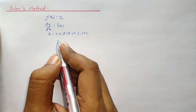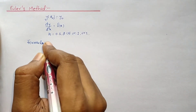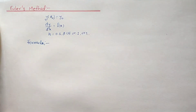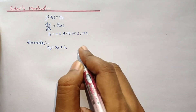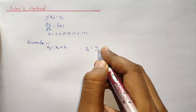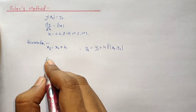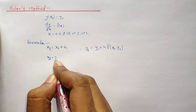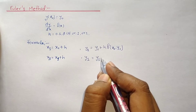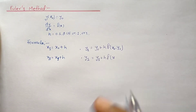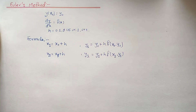The formula used in Euler's method is: x₁ equals x₀ plus h, and y₁ equals y₀ plus h·f(x₀, y₀). Similarly, x₂ equals x₁ plus h, and y₂ equals y₁ plus h·f(x₁, y₁).